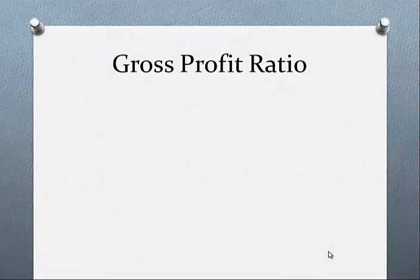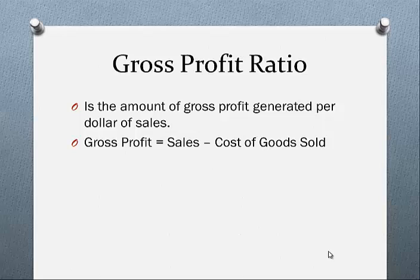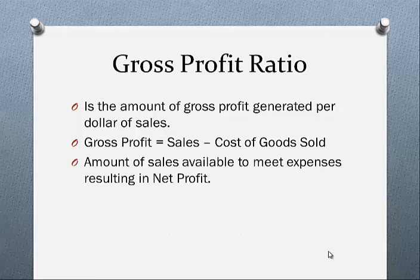Let's look at the gross profit ratio. It's the amount of gross profit generated per dollar of sales. As seen on the income statement, it's sales less cost of goods sold giving us gross profit. It represents the amount of sales available to meet expenses resulting in net profit — so that's the profit in the first instance, and from that we take away the other expenses to derive our net profit.